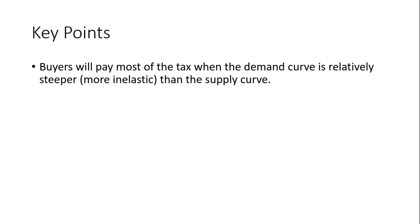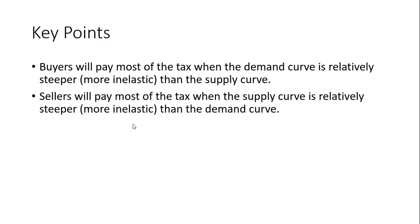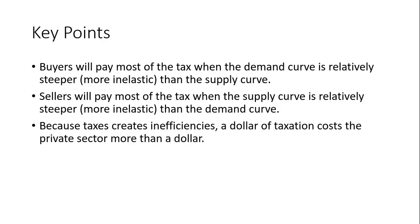Key points: buyers will pay most of the tax when the demand curve is relatively steeper or more inelastic than the supply curve. Sellers will pay most of the tax when the supply curve is relatively steeper or more inelastic than the demand curve. In general, it's the more inelastic side of the market that will pay the majority of the tax. Because taxes create inefficiencies, a dollar of taxation costs the private sector more than a dollar.